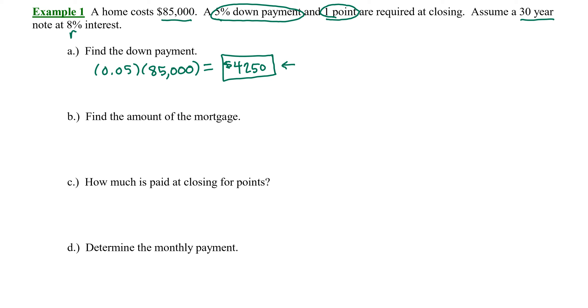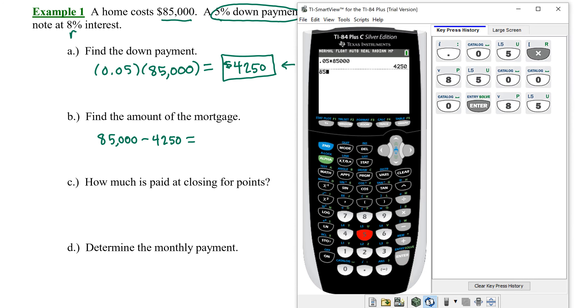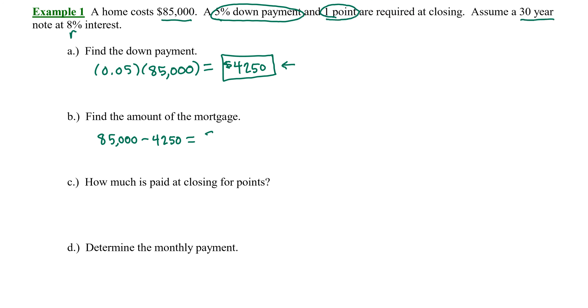Find the amount of the mortgage. Well, the amount of the mortgage is going to be the price of the home minus our down payment. So whatever is left after we make that down payment. So we're going to take $85,000 and subtract $4,250. And that gives us $80,750. $80,750. So that is what we need to borrow from the lender.